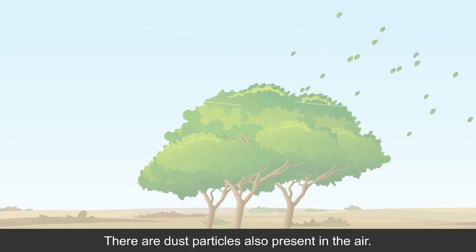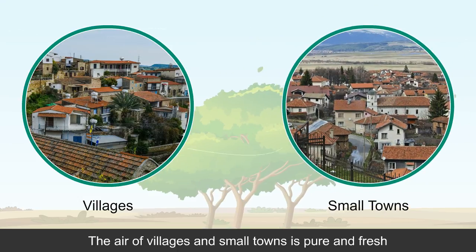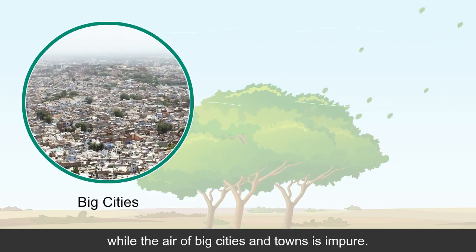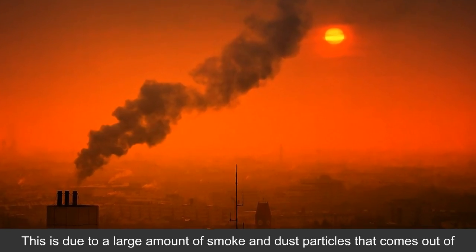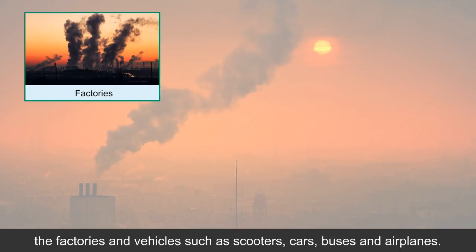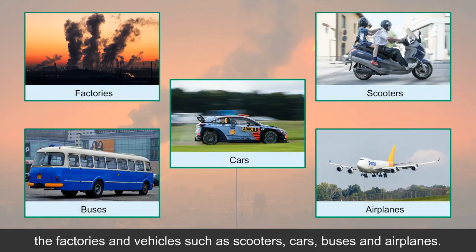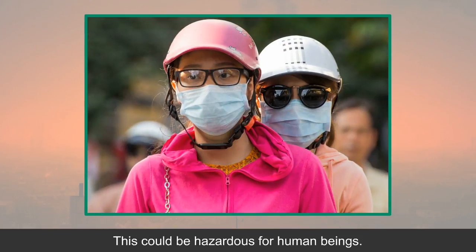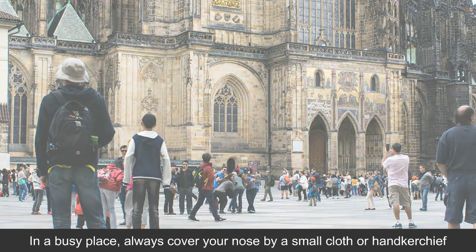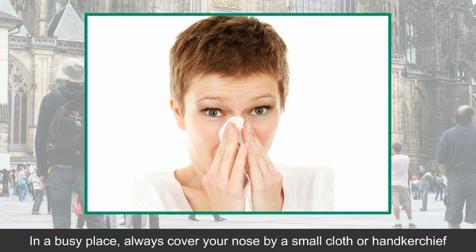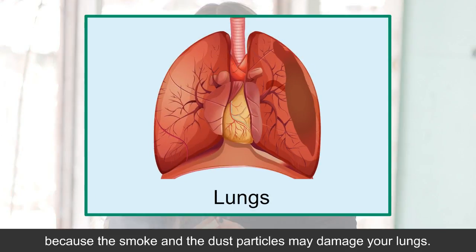There are dust particles also present in the air. The air of villages and small towns is pure and fresh, while the air of big cities and towns is impure. This is due to a large amount of smoke and dust particles that come out of factories and vehicles such as scooters, cars, buses and airplanes. This could be hazardous for human beings. In a busy place, always cover your nose with a small cloth or handkerchief because smoke and dust particles may damage your lungs.